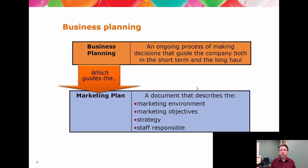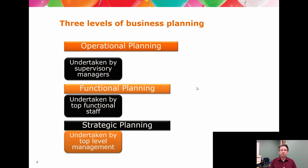To get to that point, we have a sequence of planning. At the top level we've got the business plan, whose role is to set the direction for the whole of the organization. Within the umbrella of a business plan, you can have multiple marketing plans. The marketing plan has a role as a subunit of the business plan. We have three levels of planning process: the operational plan, the functional plan, and the strategic plan.